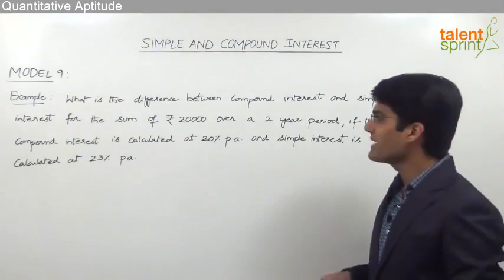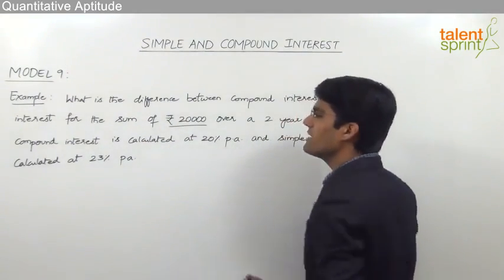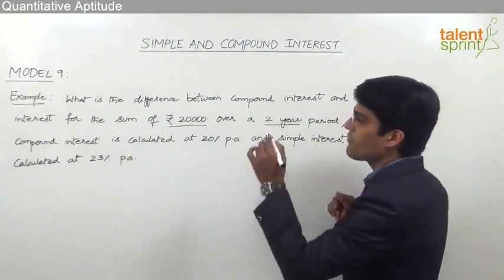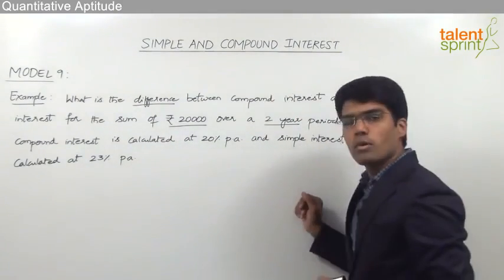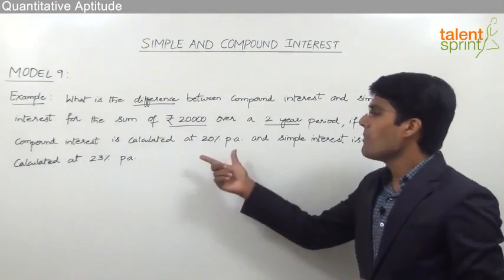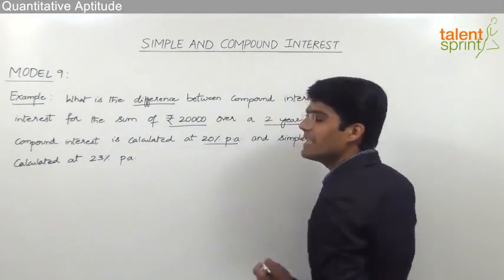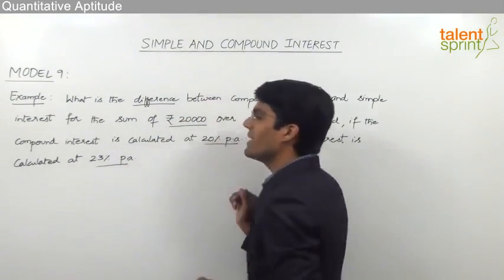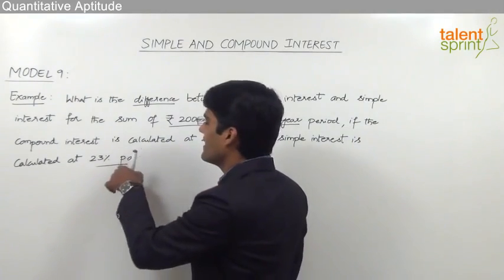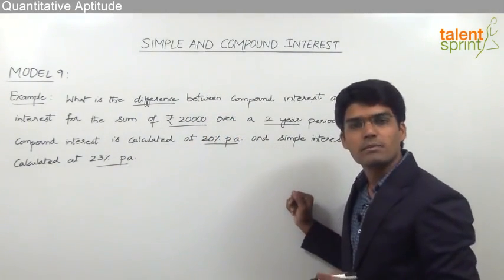So as you can see here the principal amount is 20,000 rupees and the time period is two years and we have to find out the difference between compound interest and simple interest. But the point here is compound interest is calculated at 20 percent per annum and simple interest is calculated at 23 percent per annum. That means the rate of compound interest and the rate of simple interest are different from each other.